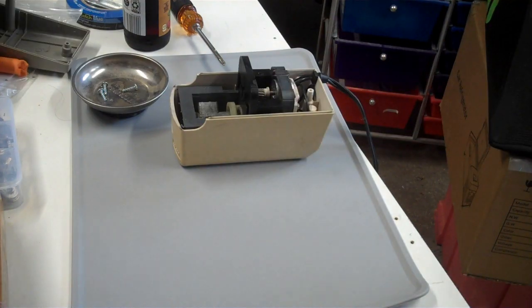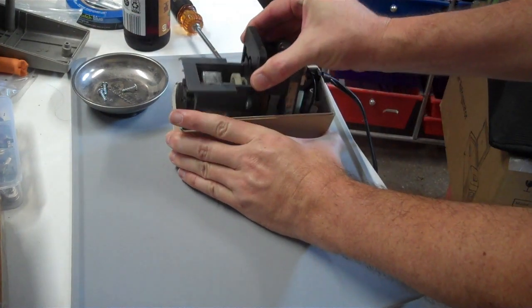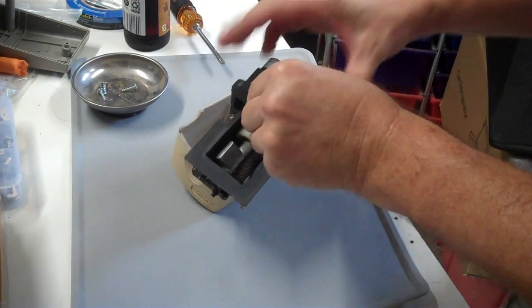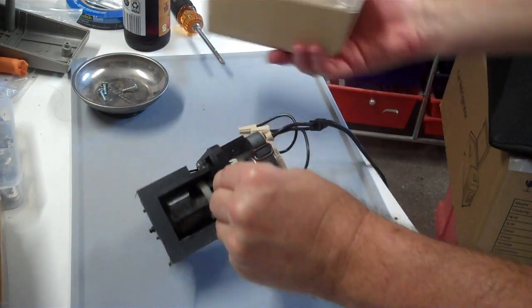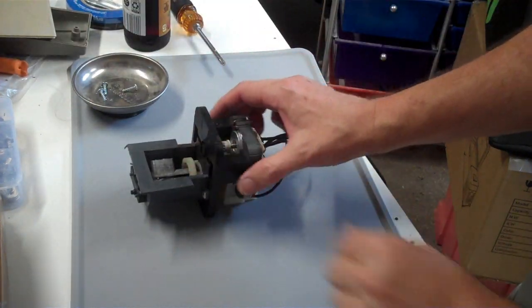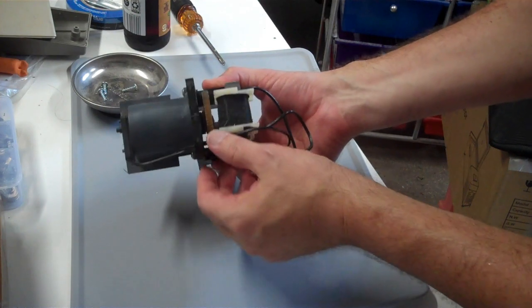So once you take the bottom off, this mechanism lifts right out. There's a little plug here that just will slide out of that plastic, and then you can put all the plastic stuff away. And here we're going to be able to see the problem.